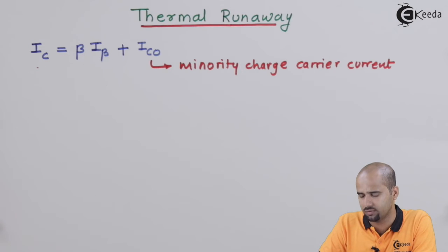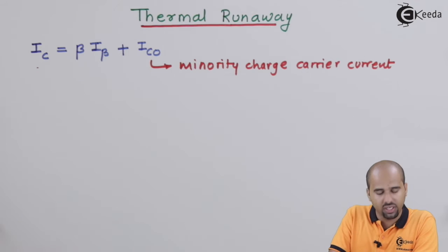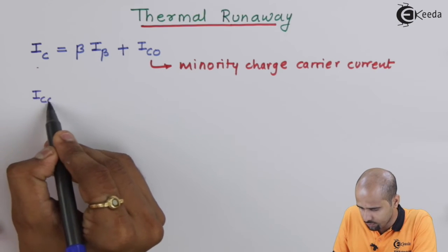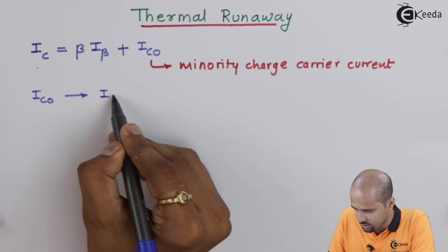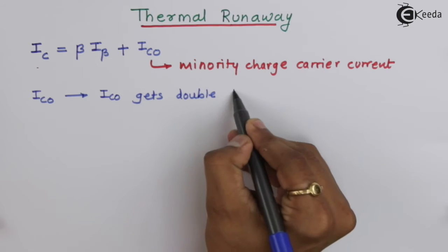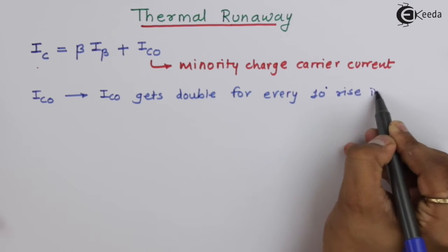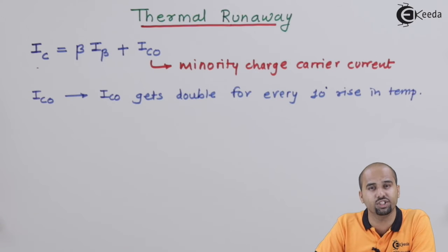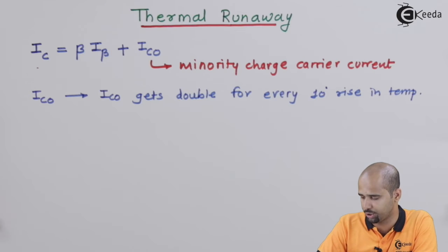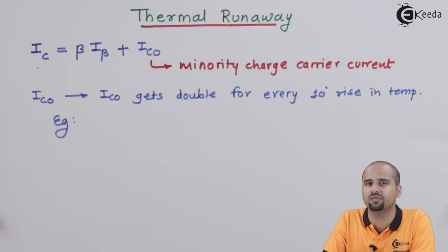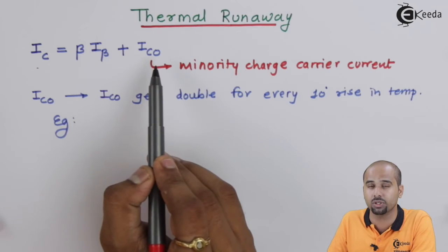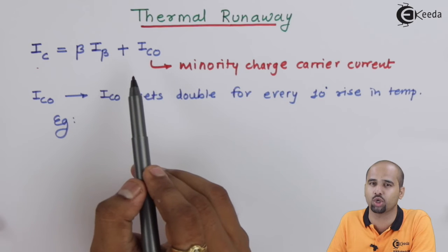A simple fact when learning about thermal runaway is temperature dependency. As a property of Ico, Ico gets doubled for every 10 degree rise in temperature. Note that Ico is generally in the range of nanoamperes — very, very small — so we normally neglect this value. But do not neglect it when increasing the temperature beyond normal operating temperature.